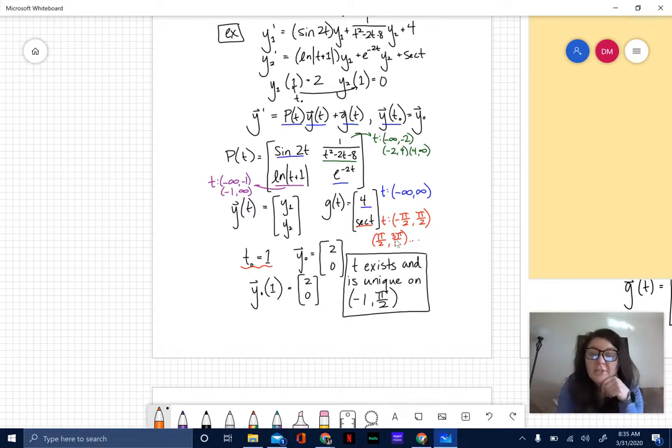I am trying to find the largest interval on which our t sub zero exists. If t sub zero equals 1, then if I was just looking at this rational function here I would say negative 2 to 4. Well that narrows a bit because where I look at my natural log function, I have a discontinuity at negative 1, so that window narrows to be negative 1 to 4. If I see my other discontinuities that I have here, I would want to make sure I know that pi over 2 is equal to about 1.57, so that narrows my window that much more. T sub zero being equal to 1 exists and is unique on the interval from negative 1 to pi over 2.